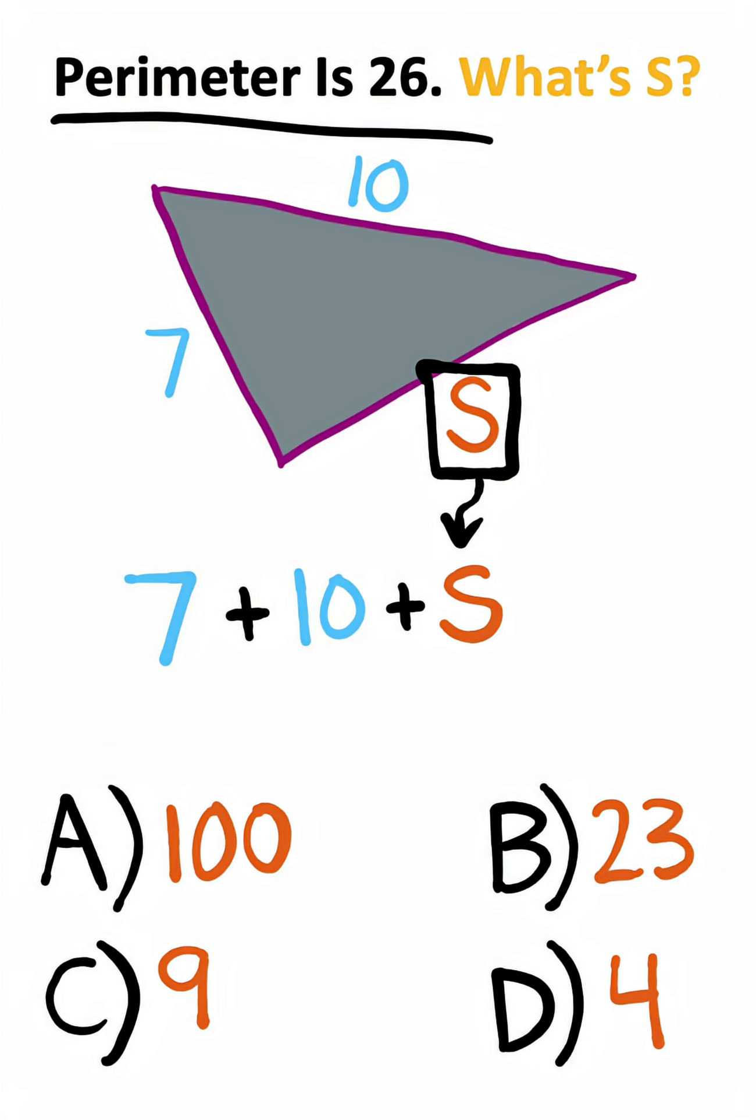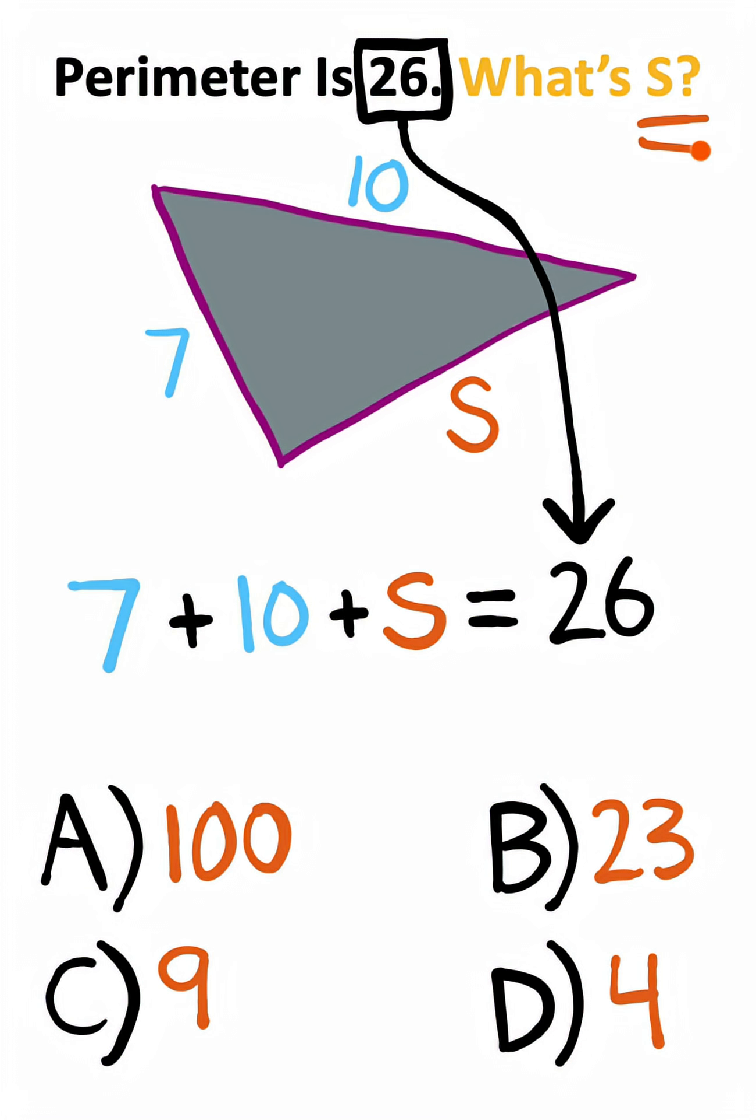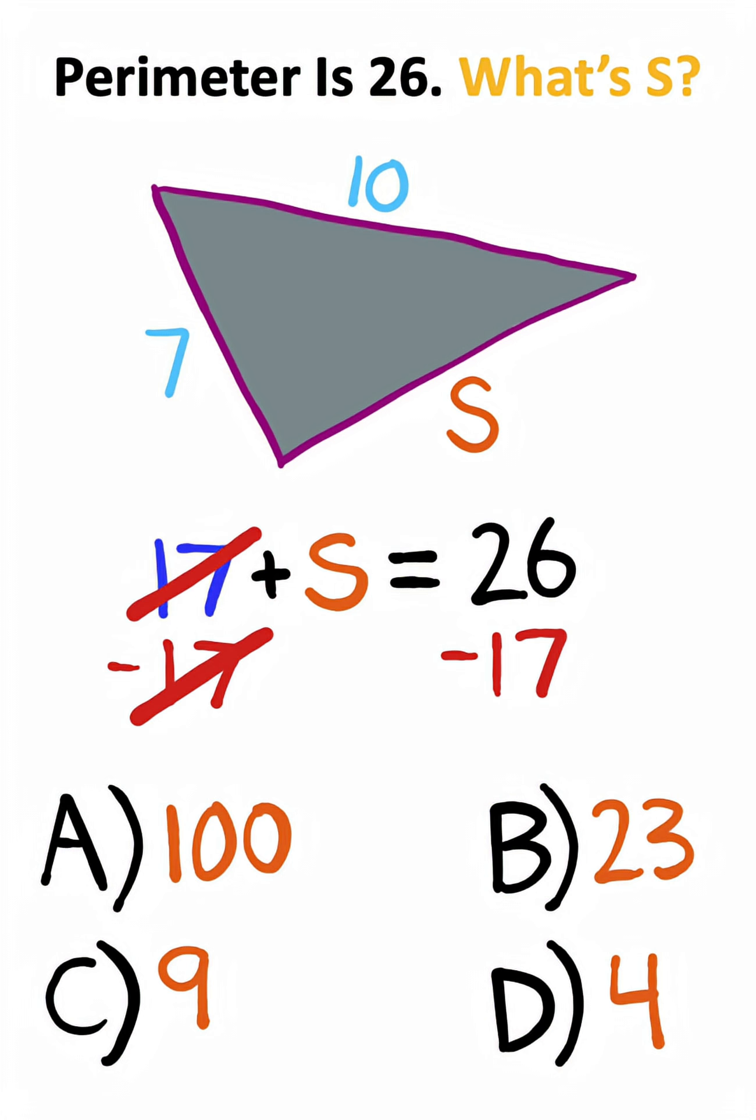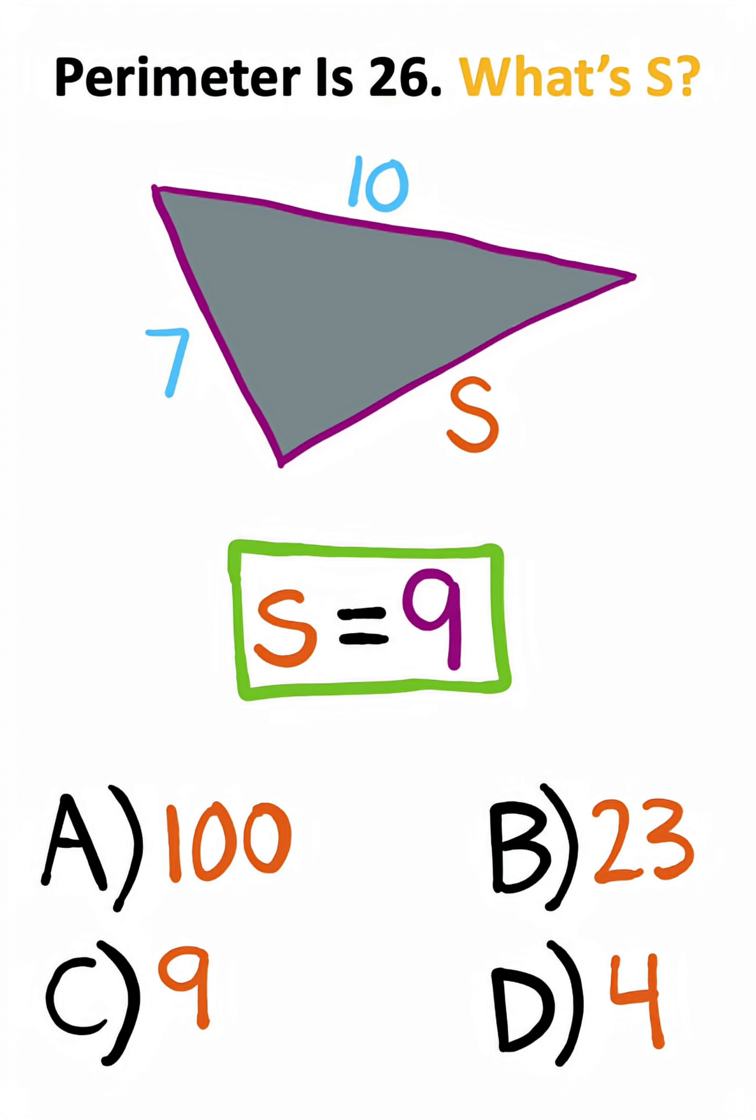Now since we have the perimeter is 26, and we're trying to find the side S, I just need to isolate it on one side of the equation. This will give me 9 or option C.